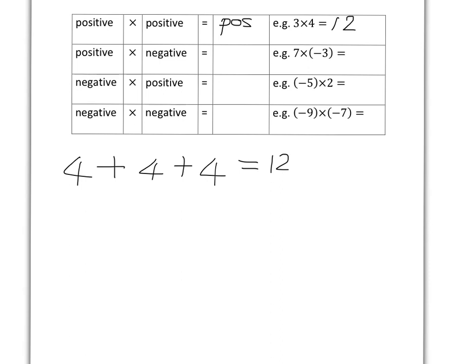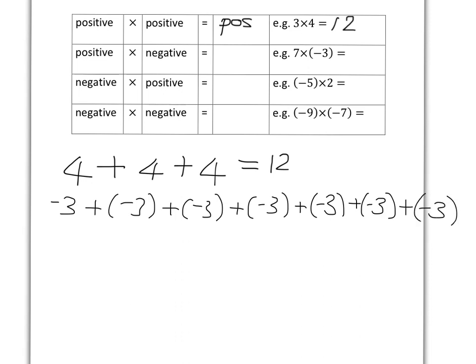Let's look at the next one. The next one's a bit different. It's a positive and you're multiplying it by a negative. But the meaning of the multiplication has to be the same. So what this is, is you've got 7 lots of negative 3. In other words, you've got 1, 2, 3, 4, 5, 6, 7 lots of negative 3.